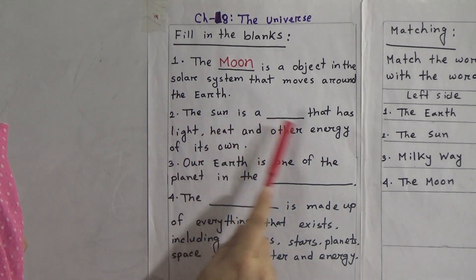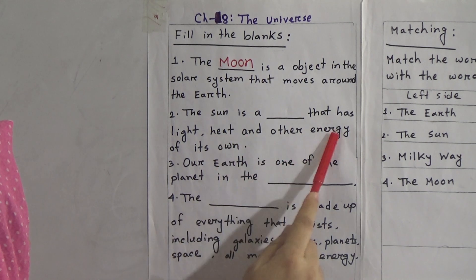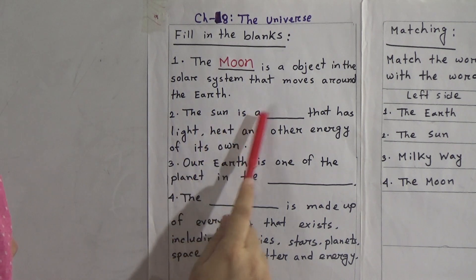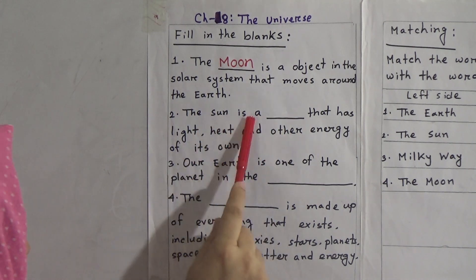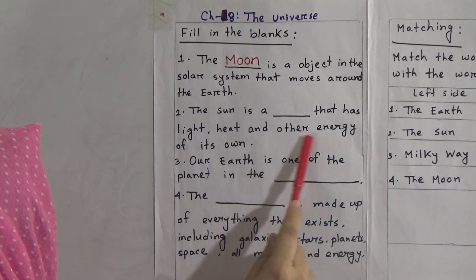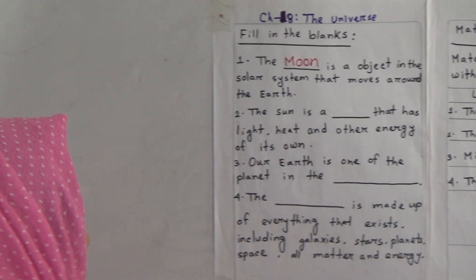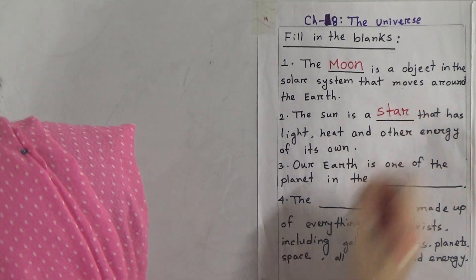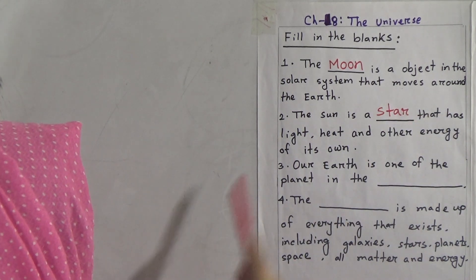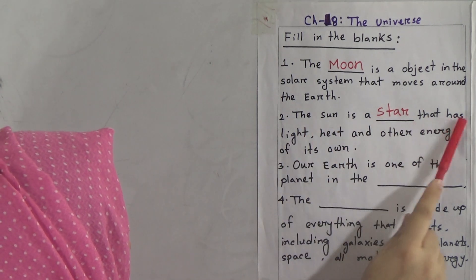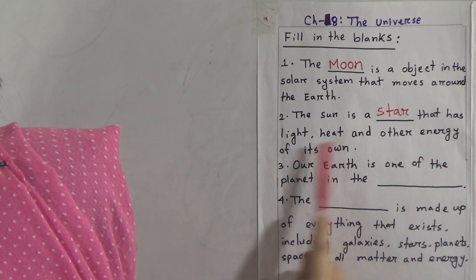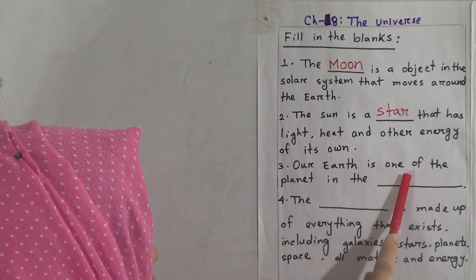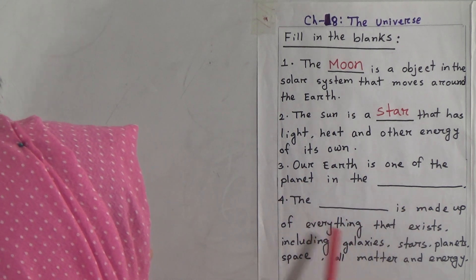Number two: the Sun is a blank that has light, heat, and other energy of its own. The answer will be: the Sun is a star. The Sun is a star that has light, heat, and other energy of its own. Now write 'star' for number two. Fill in the blanks number two: the Sun is a star that has light, heat, and other energy of its own.